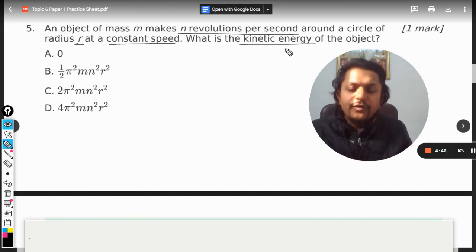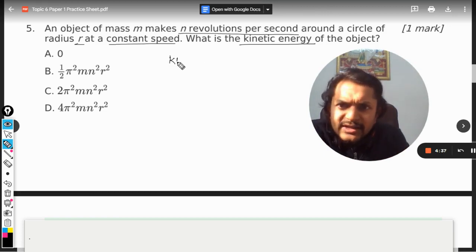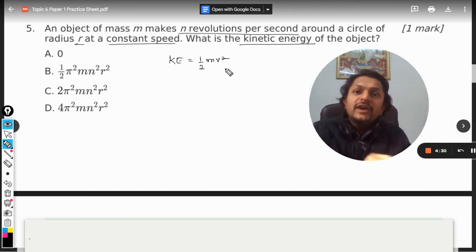So we need to find the expression for kinetic energy. As we all know that the kinetic energy is given by half m v square, so the question reduces to like what is v. So we have to find the expression for the velocity of the object.